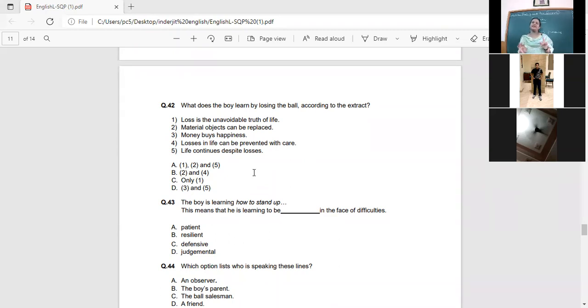What does the boy learn by losing the ball according to the extract? So there are five options and you have to slay the best one. Lost is the unavoidable truth. That is what the whole poem is talking about. Material objects can be replaced. Is he going to learn this lesson? So he says that a ball, a dime, and I agree you can buy the ball but it is not going to replace that one. Money buys happiness. Is he going to learn this lesson? Losses in life can be prevented with care. A life continues despite losses. Only one. What about five? But it is not in the correct option. So look at one is their losses. That is absolutely correct. But two and five from that two is not required. Material objects can be replaced. Losses can be prevented with care. No, there are some losses that are inevitable. You can't prevent them. So there is only one correct option that is one.